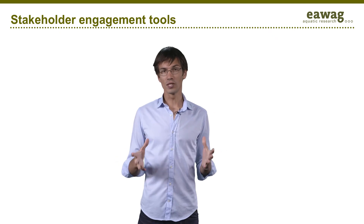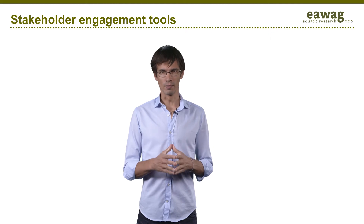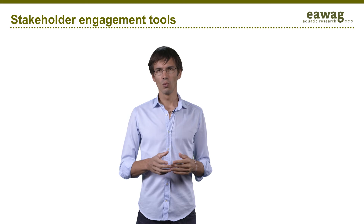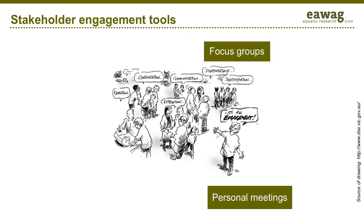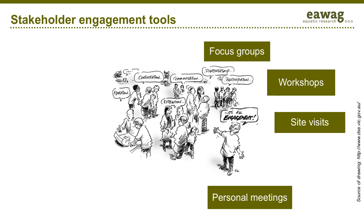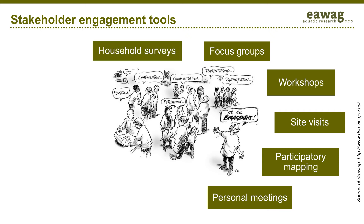There are different tools to engage stakeholders. We already mentioned the Fecal Waste Flow Diagram or SFD and the City Service Delivery Assessment, which can be used for consultation and collaboration during the data collection phase. For example, you can organize personal meetings with formal or informal interviews. You can organize focus group discussions if you prefer to work with a stakeholder group as a whole. Or you can organize workshops and site visits. Participatory mapping is a powerful community engagement tool. Household surveys can be designed to understand the needs and constraints of stakeholders, and are a pure consultation tool.